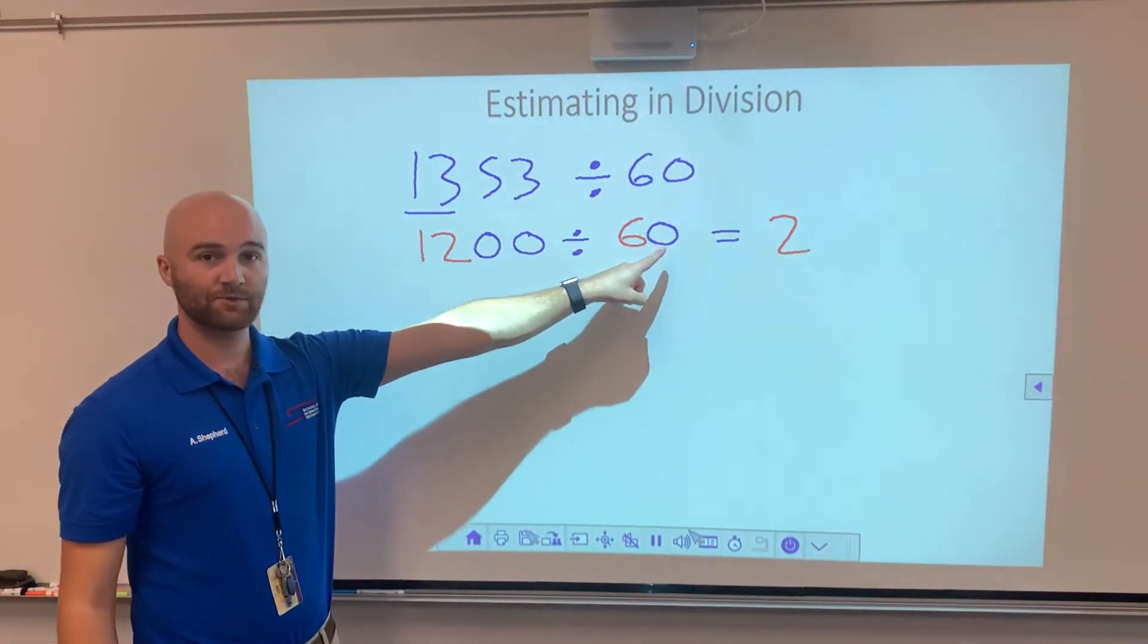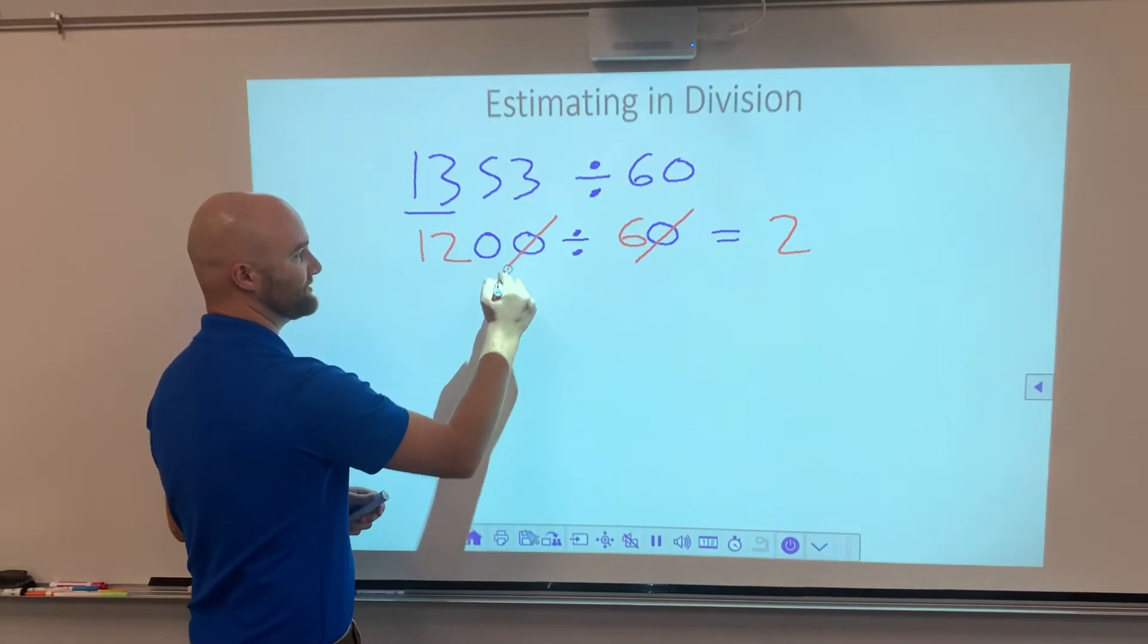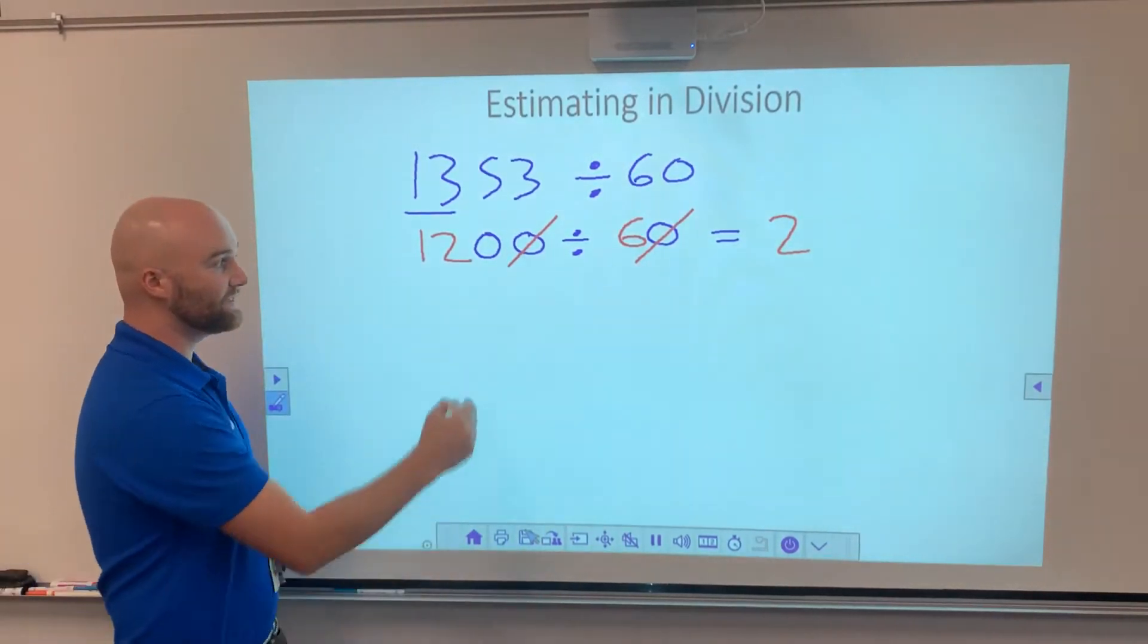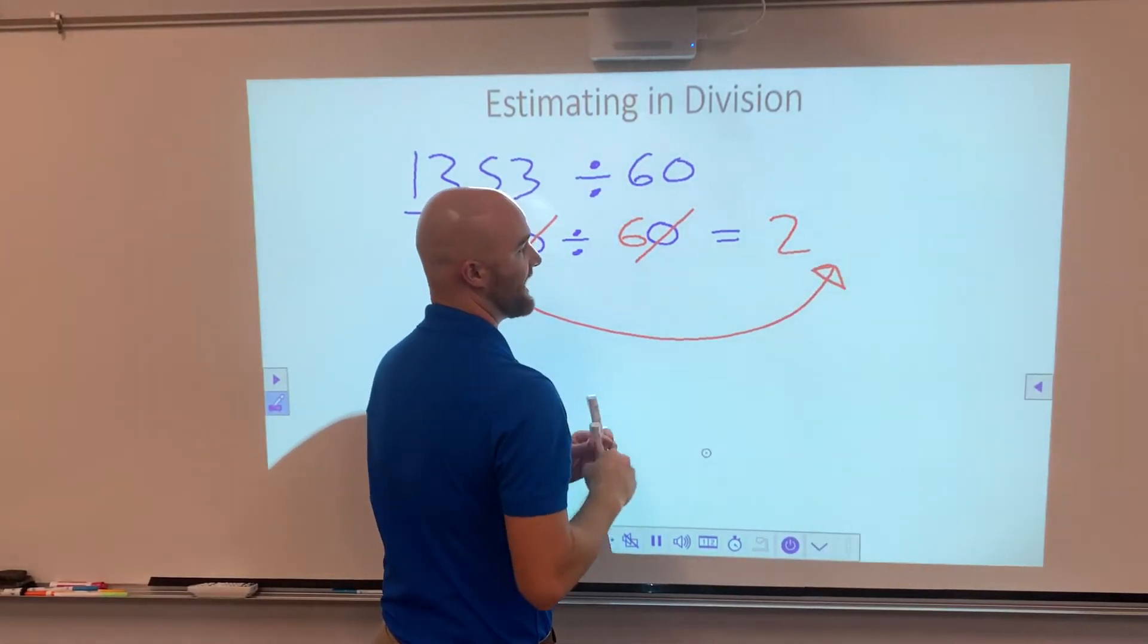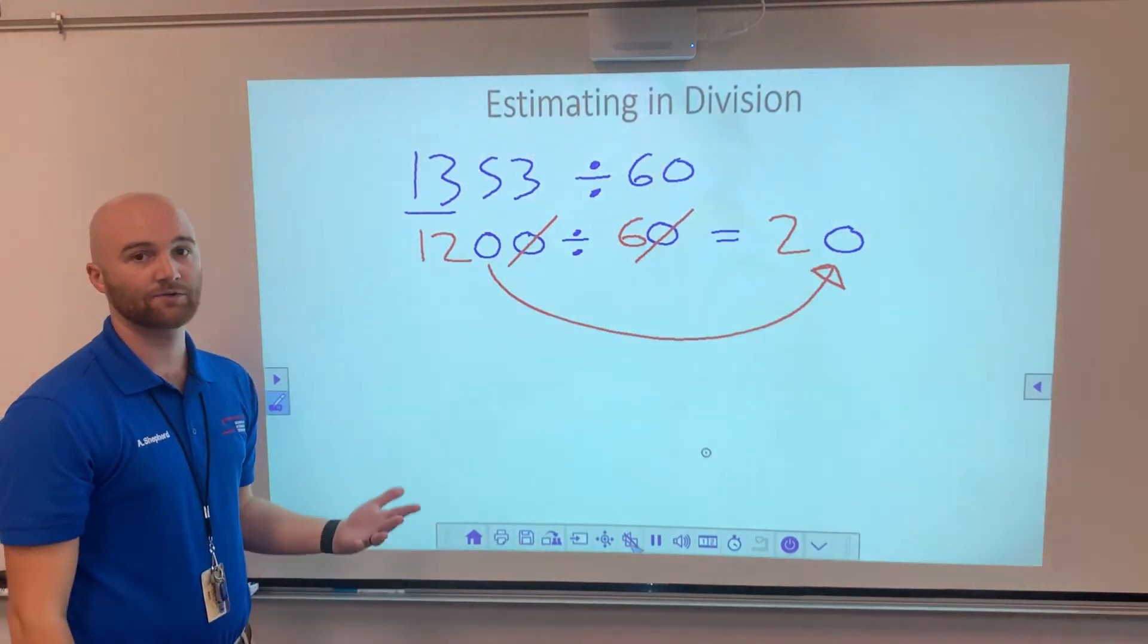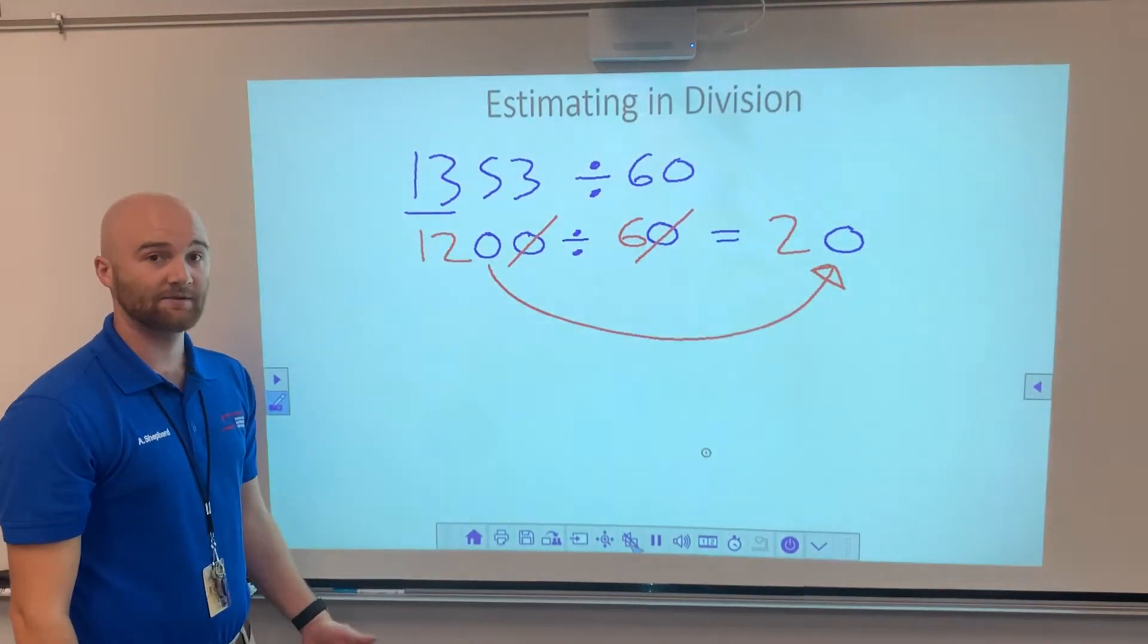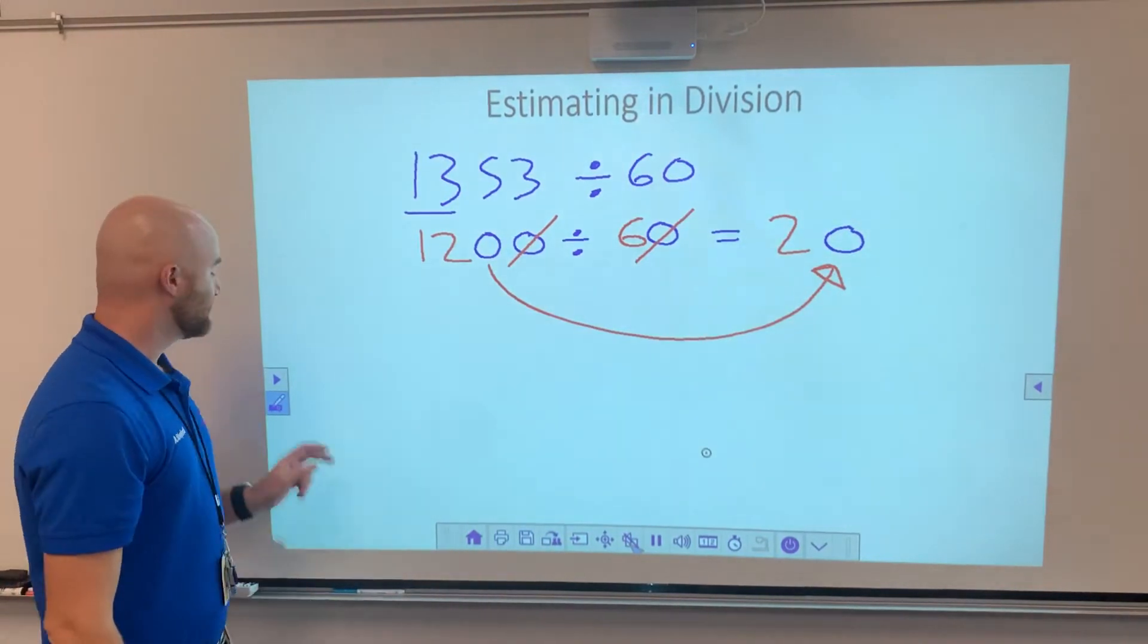So I've got 2. But what do I do with these extra zeros? Well, one of these zeros I'm trying to divide away, so I get to cancel off one of these zeros. But the other zero still has to come down to the other side. And now I've got my estimate of around 20. There's an estimate for us. All we did is we canceled out some zeros. Let's try another one.